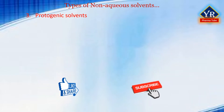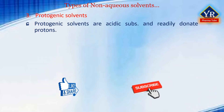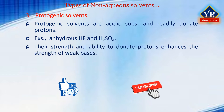Protogenic solvents are acidic in nature and readily donate protons. Anhydrous acids such as hydrogen fluoride and sulfuric acid fall in this category. Because of their strength and ability to donate protons, they enhance the strength of weak bases.